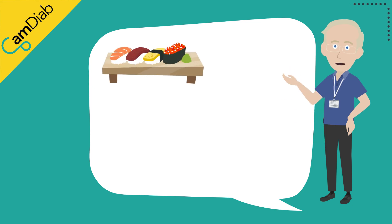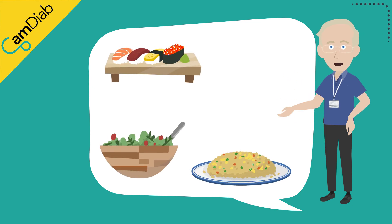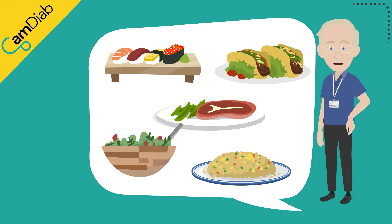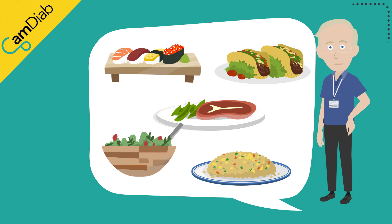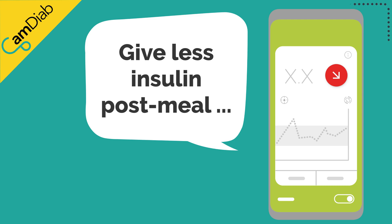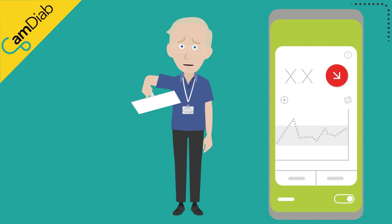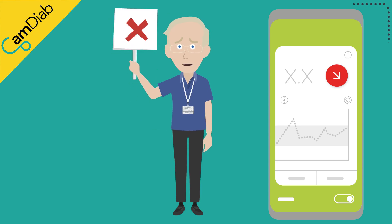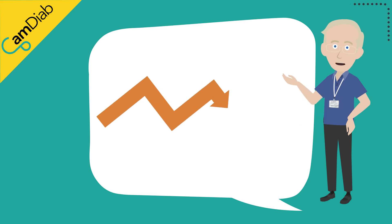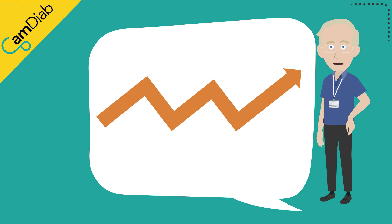The same is true if someone is constantly giving too much insulin pre-meal — for example, when their insulin-to-carbohydrate ratio is too strong or they are overestimating their carbohydrates. MyLifeCam APSFX will learn that it needs to give less or even stop delivering insulin post-meal to try to prevent a low glucose level. It's important to keep in mind that even stopping insulin after the meal may not prevent hypoglycemia if the insulin on board is too high.